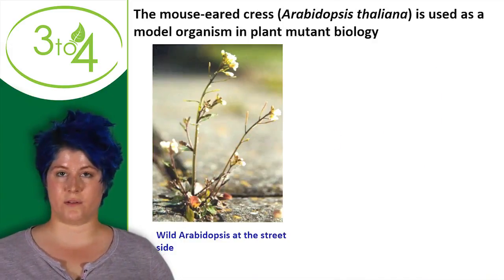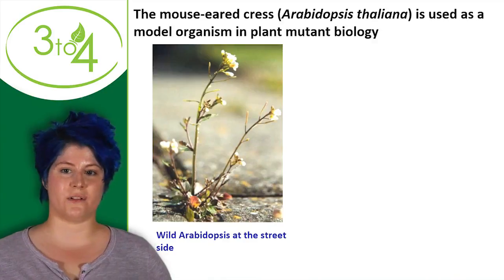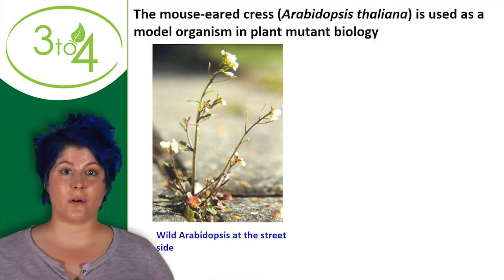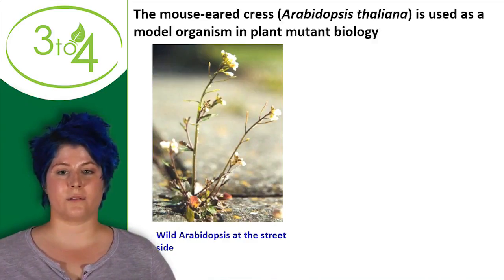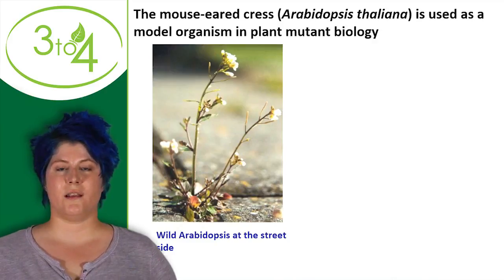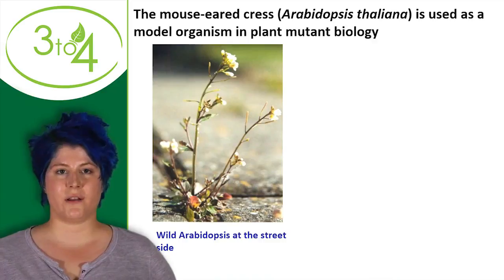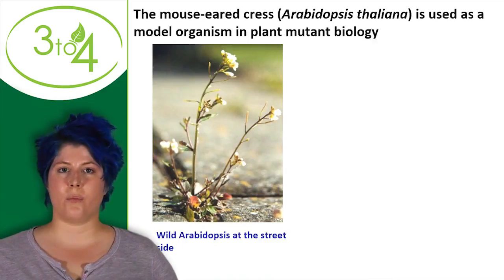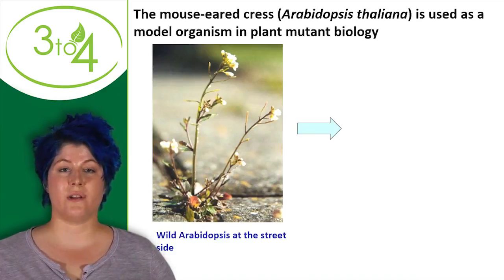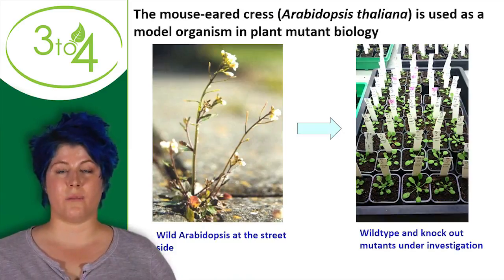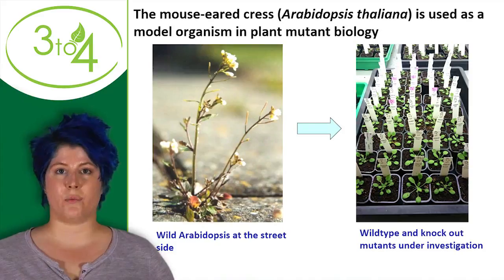In my lab we work with the mouse-ear cress, or Arabidopsis thaliana as it is called in Latin — it is a plant model organism for mutant biology. Here you can see a wild type Arabidopsis thaliana; you can find it everywhere on roadsides. It is at home in Europe, North America, Australia, and Asia. We take this plant, transform it, and make it a mutant.